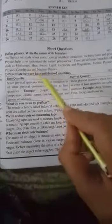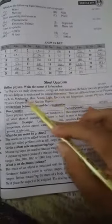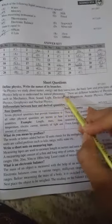Define physics. Write the name of its branches. In physics we study about matter, energy and their interaction. The basic laws and principles of physics help us to understand the natural phenomena. There are different branches of physics such as mechanics, heat, sound, light, electricity and magnetism, atomic physics, plasma physics, geophysics, and nuclear physics.